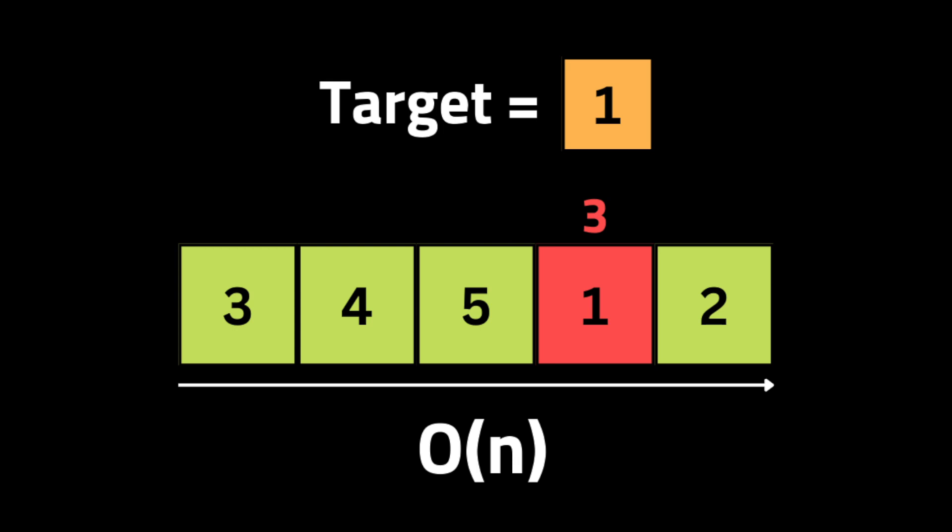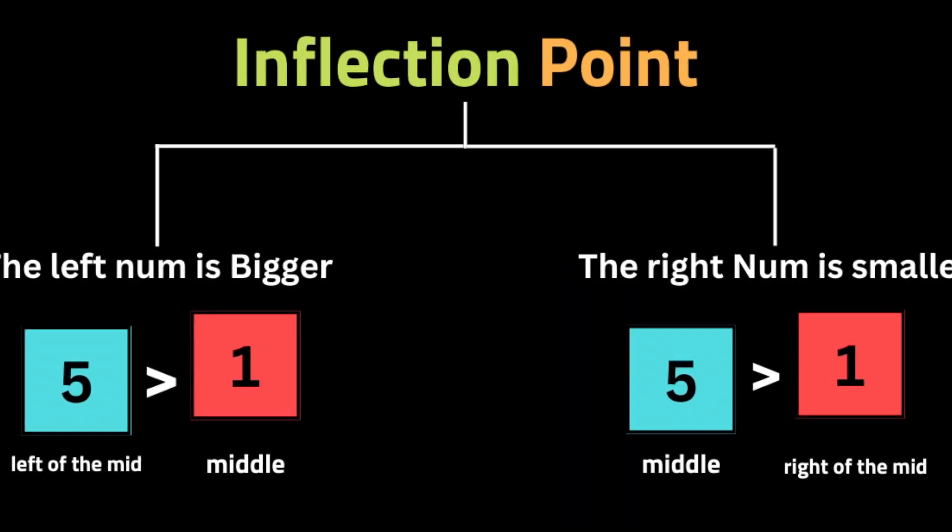The brute force approach is to iterate through the entire rotated sorted array and find the index of the target. But this solution has a time complexity of O(n), which will not pass a coding interview. So we're going to use the binary search algorithm to find the target. However, we know that binary search only works on a sorted array — so how do we implement it on a rotated sorted array?